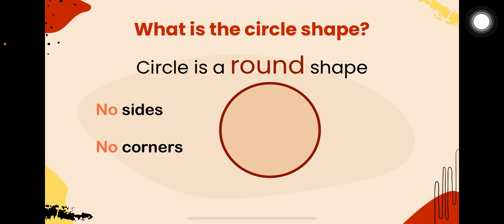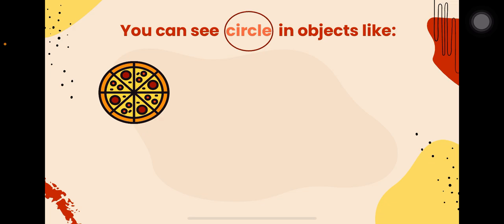So, let's see what circle looks like. You can find circle in objects like a pizza. Wow! A ball. You see? It looks like a ball.